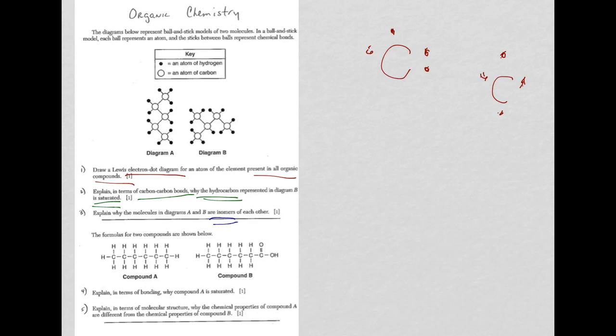So, in questions one, two, and three here, really it was all about knowing definitions, knowing what element is in all organic compounds, carbon, and doing electron dot diagram from there. In question two, knowing what saturated means, and then in question three, what isomers mean. Okay, let's move on to four and five.